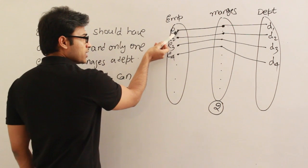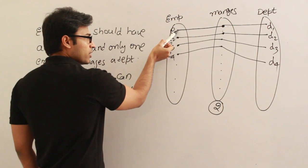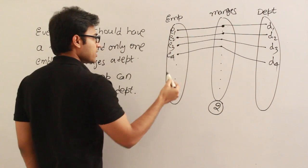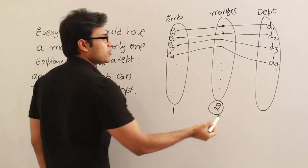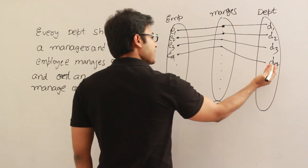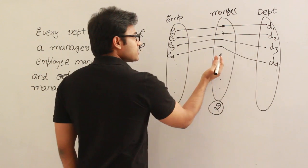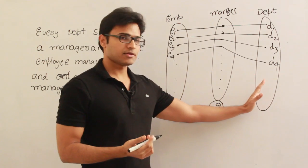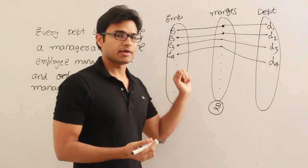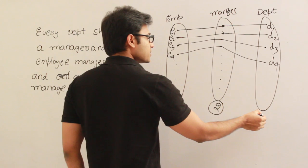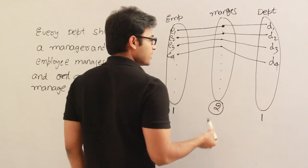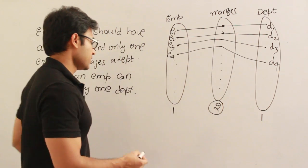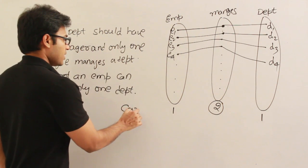The maximum number of relationships one employee entity can participate in is one. What about the department? A department has to be managed by at least one and exactly one employee. So the maximum cardinality is one. The cardinality here is one and one — this is the cardinality ratio. Cardinality means the maximum number, so this is a one-to-one cardinality ratio.